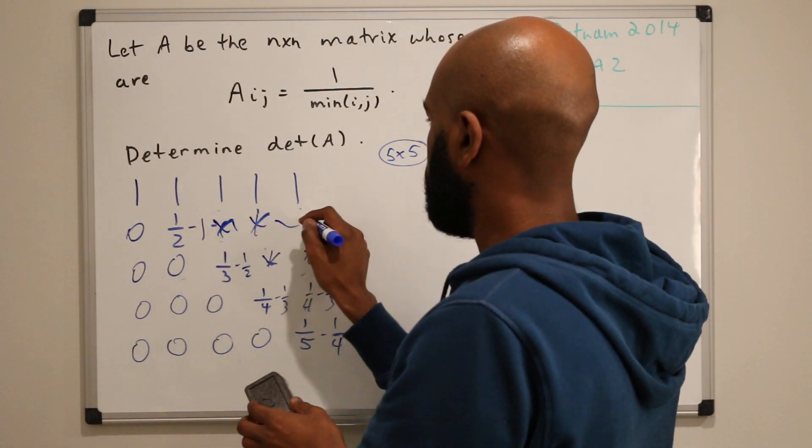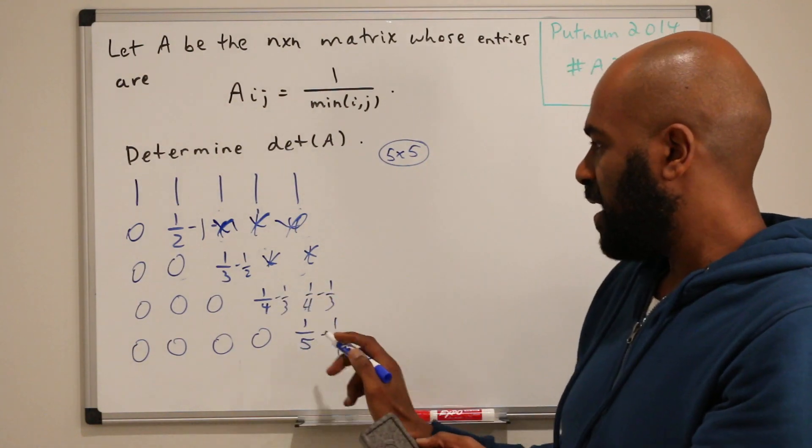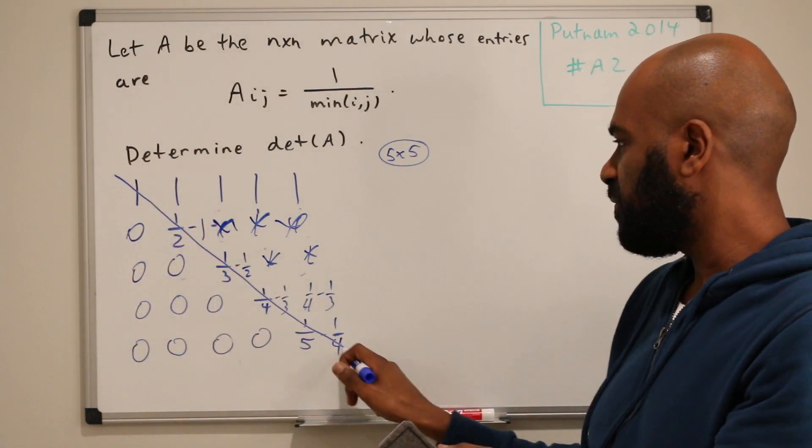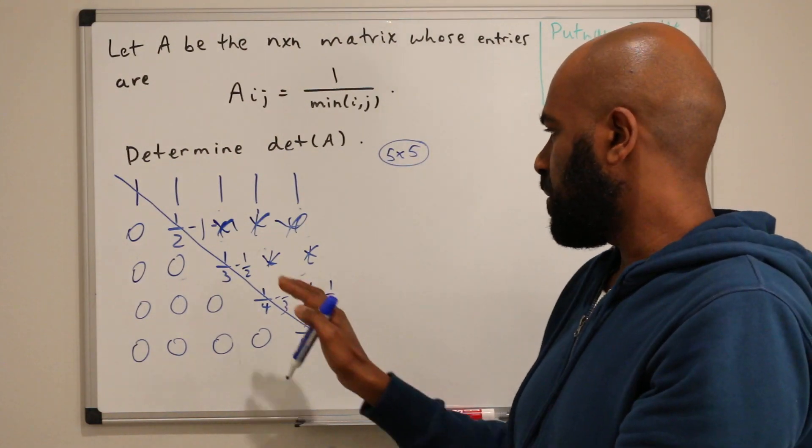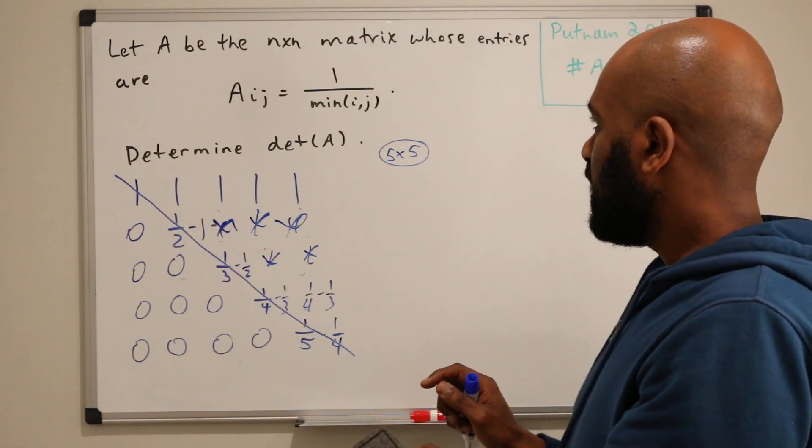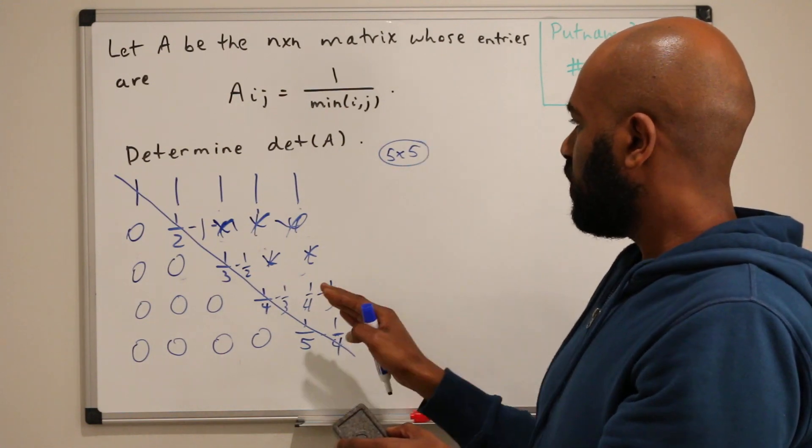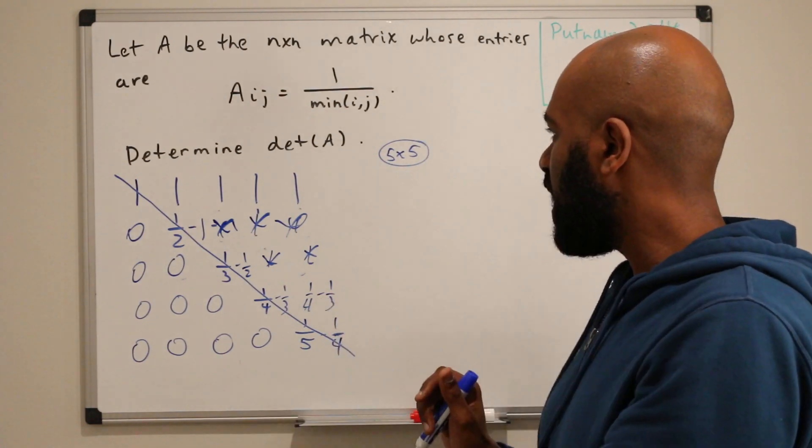And so now we're in a great position because we have an upper triangular matrix and we know all of its diagonal entries, and so the determinant is going to be the product of these entries. Now this won't change if this is n by n instead of 5 by 5.